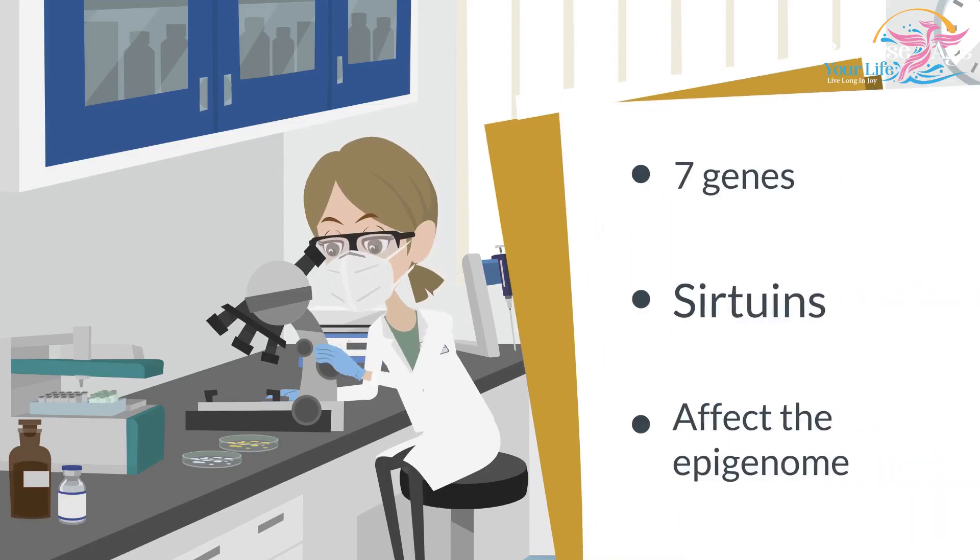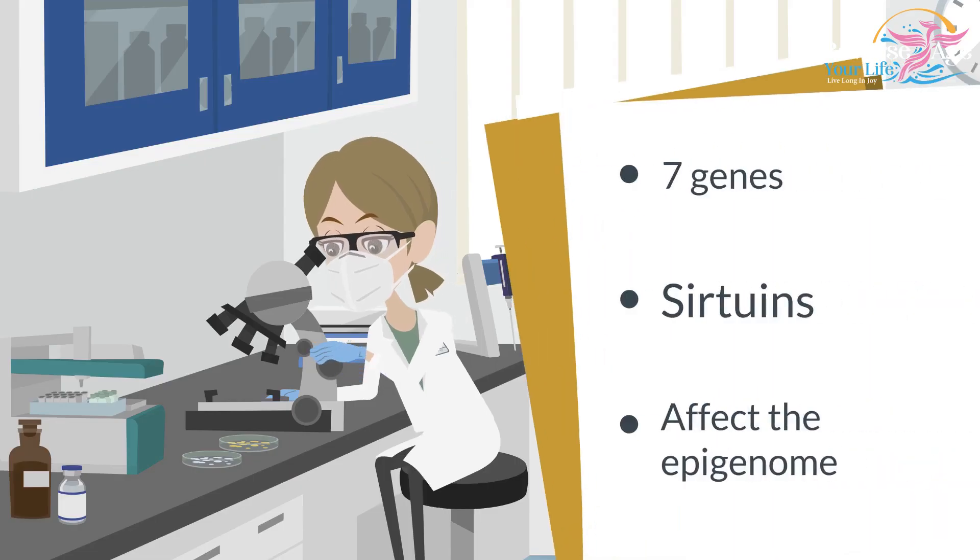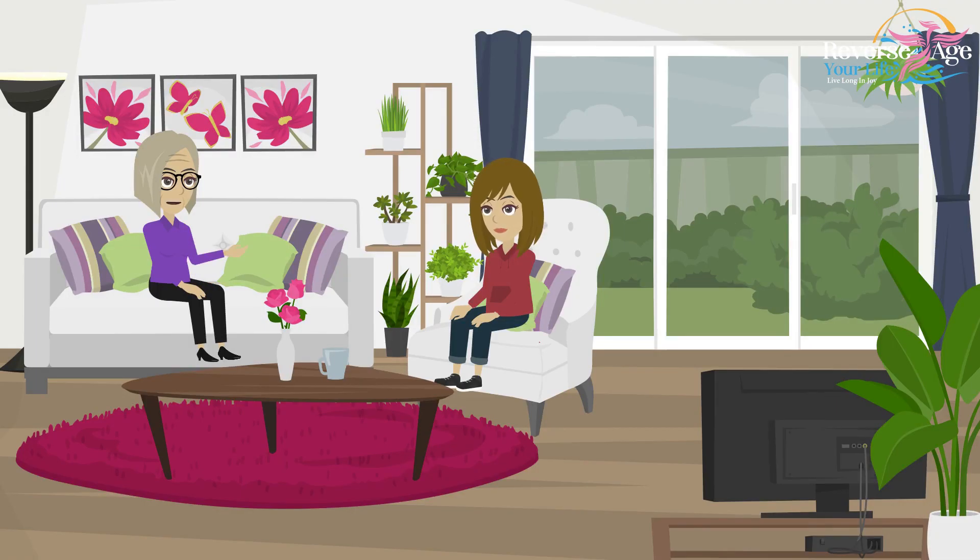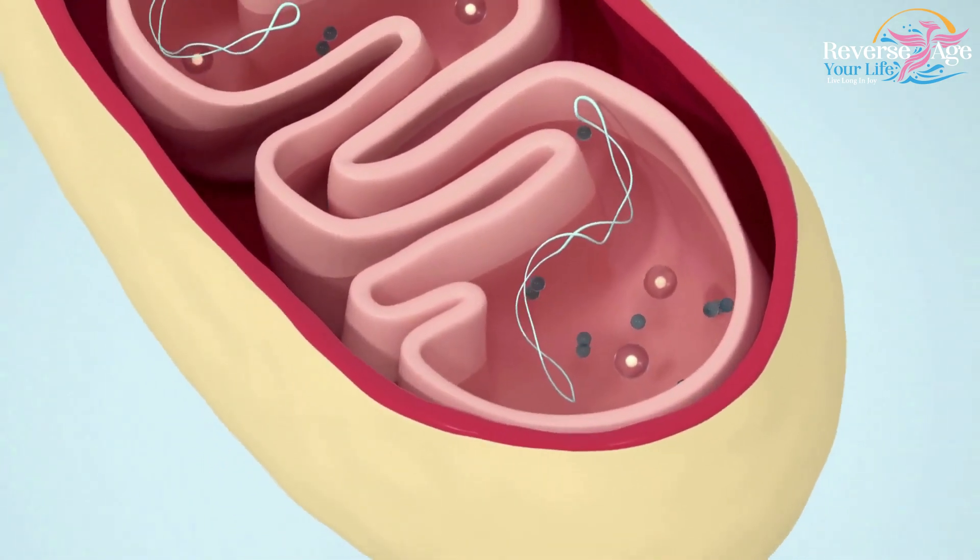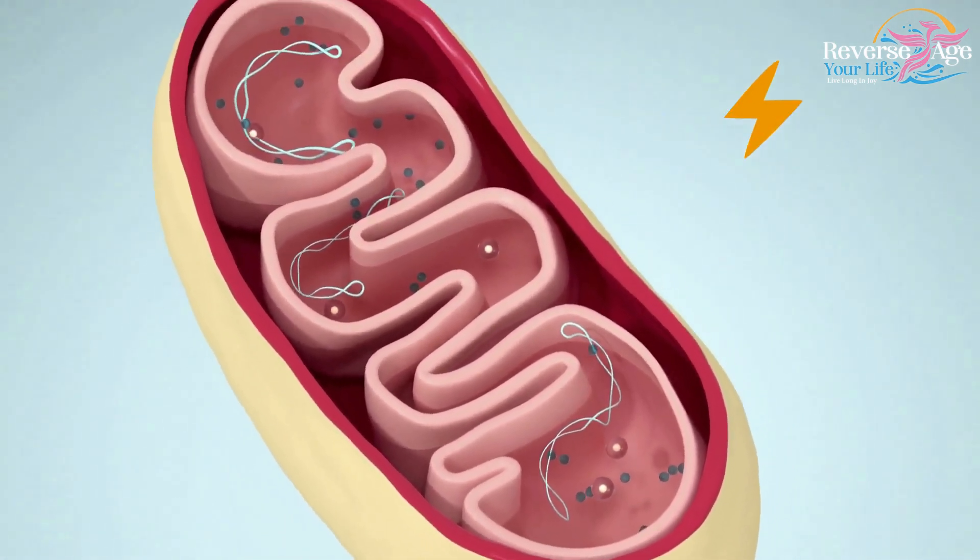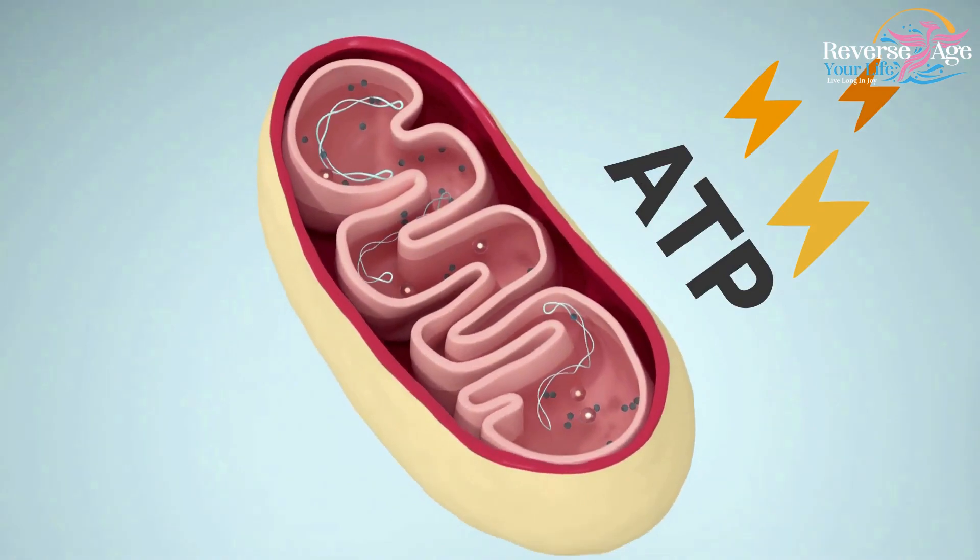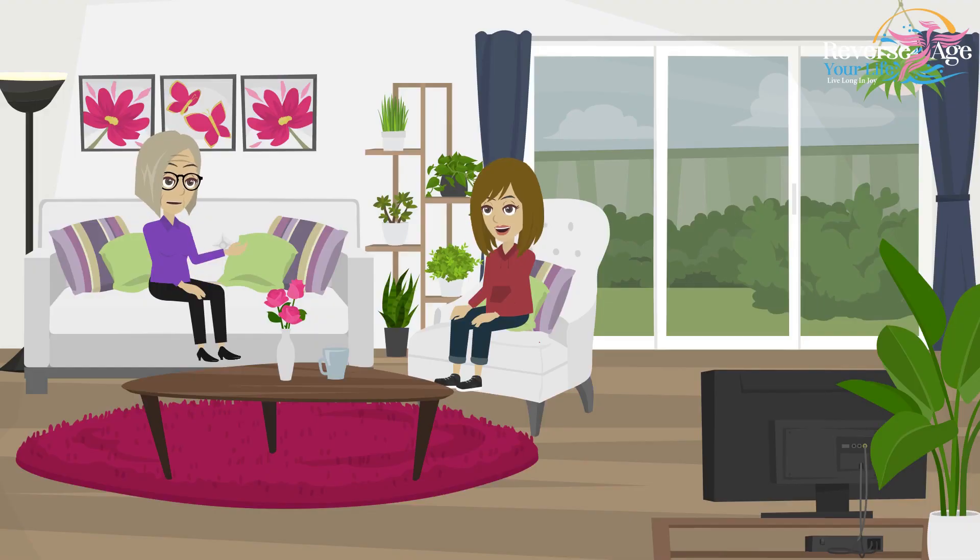Scientists have discovered that seven genes, called sirtuins, are critical for your life in a few key ways. They affect the epigenome and inflammation, and they also affect your mitochondria, which is the energy source in every cell in your body. They help the mitochondria to take food in and convert it into energy, into ATPs. They also help to maintain your DNA, especially as you get older.